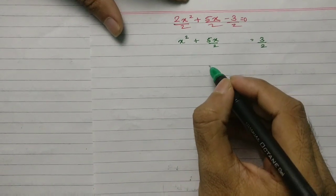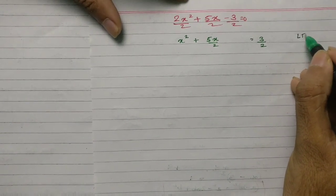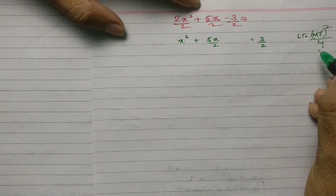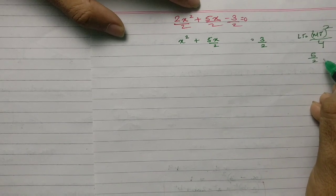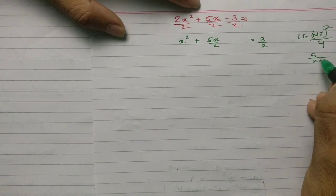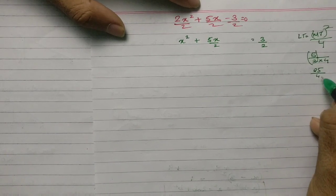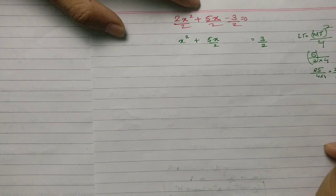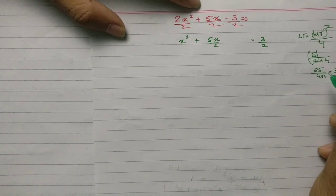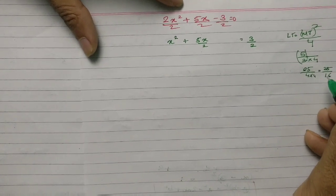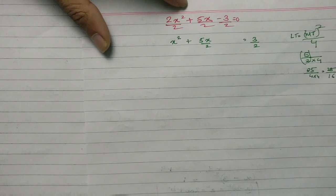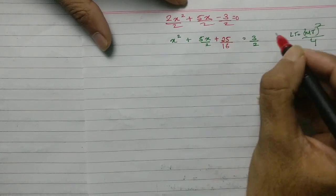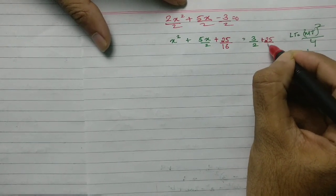Then I apply the formula: last term equals middle term squared upon 4. My middle term is 5 upon 2, so I square it and divide by 4. That is 25 upon 4 multiplied by 1 over 4, which gives 25 upon 16. So the new term is 25 upon 16, and I add it on both sides.